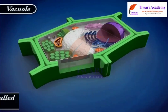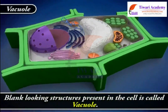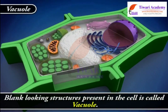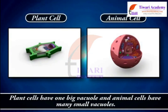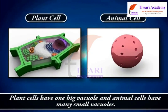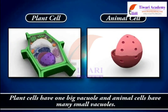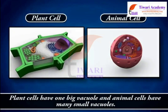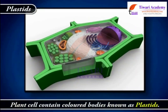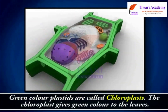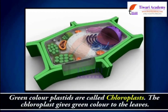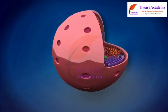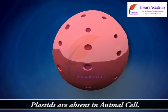Blank-looking structures present in the cell are called vacuoles. Plant cells have one big vacuole, while animal cells have many small vacuoles. Plant cells also contain colored bodies known as plastids. Green-colored plastids are called chloroplasts, which give the green color to leaves. Plastids are absent in animal cells.